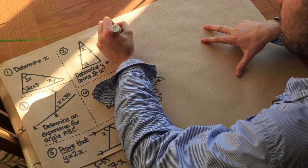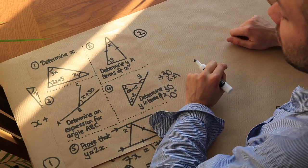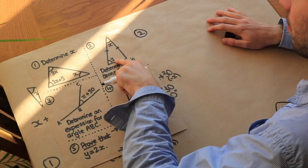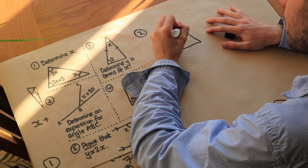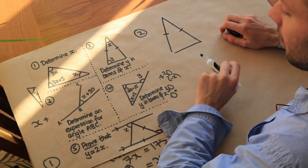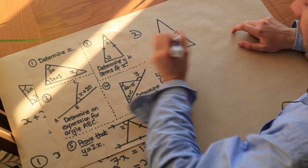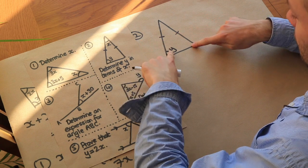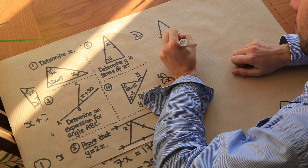Now onto the second type of problem, where we want to find expressions for angles in terms of algebraic variables. We have an isosceles triangle and want to determine y in terms of x. If there's an angle of y at the base, because the triangle is isosceles those two base angles are equal, so that other base angle is also y.